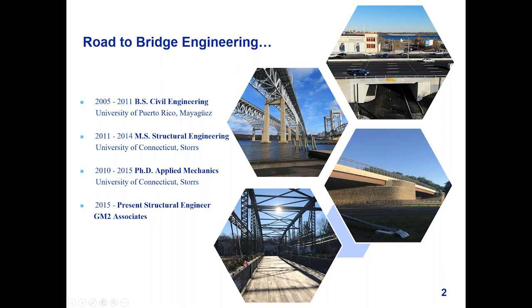A few of the key projects I have worked on: this one here is a superstructure replacement we did in Providence, Rhode Island — a very fast-paced design-build project done in six stages, each about a week. I was also involved in the design of the full structure replacement of a bridge over I-91 in Connecticut, where we ended up using DRS-IBS abutments, a type of abutment developed by FHWA, which worked very well for that structure.